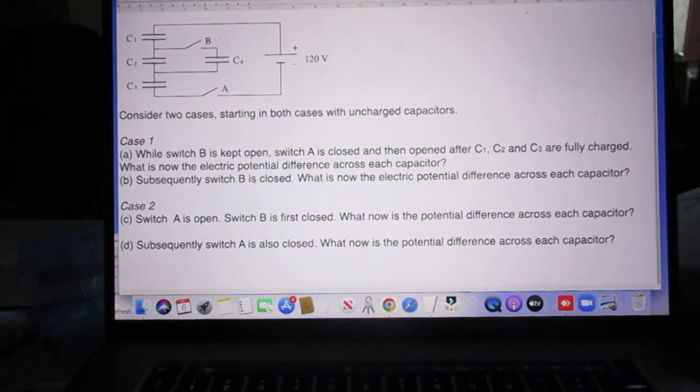So I repeat case one. Question A. While switch B is open, switch A is closed, switch A is closed and then opened after C1 and C2 and C3 are fully charged. So A is then open. What now is the electric potential difference across each capacitor? And I want the signs to be correct. Now, subsequently, switch B is closed. What is now the electric potential across each capacitor? Again, we want sign sensitivity.